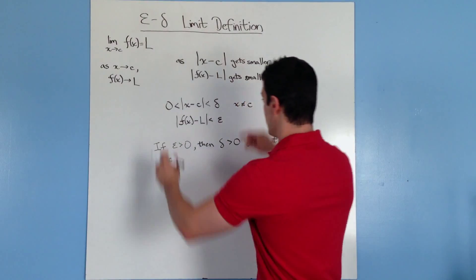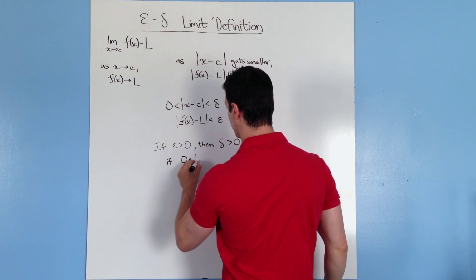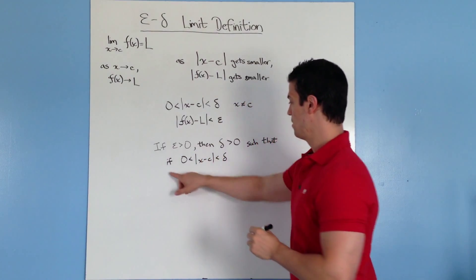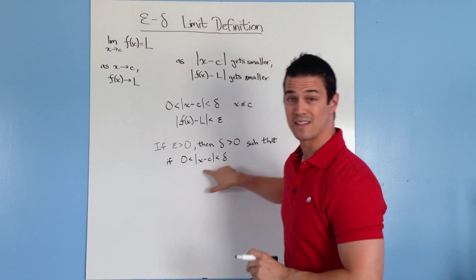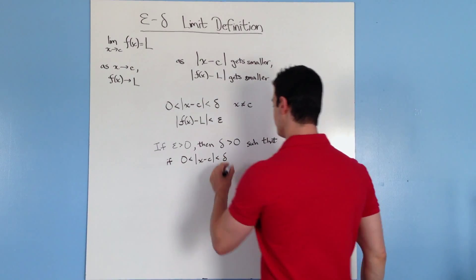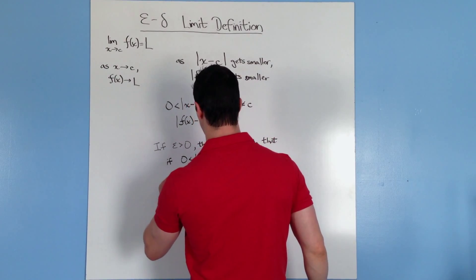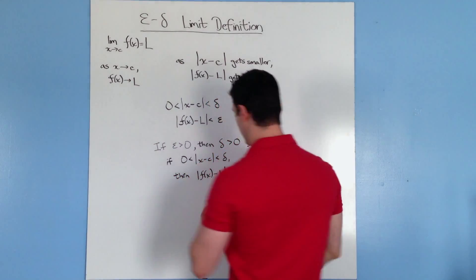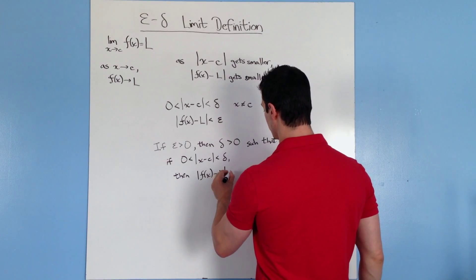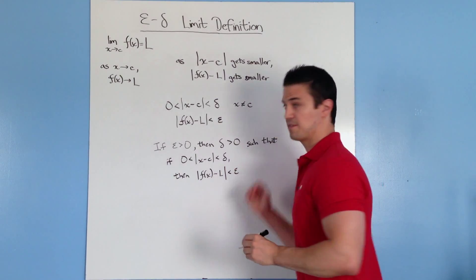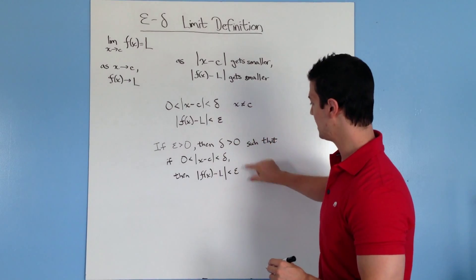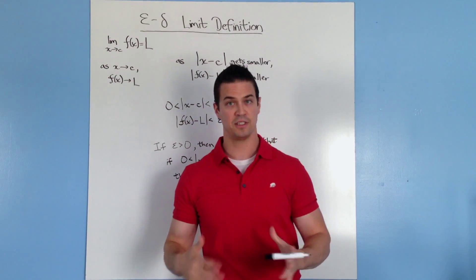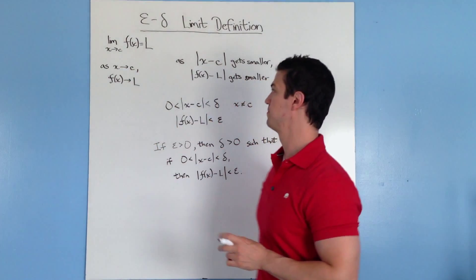Such that we have, such that this right here, if zero is less than how close x and c are to each other, which is smaller than delta, then the closeness between f of x and its limit is less than epsilon. So basically we're just moving what's over here, down here, into a formalized definition. So this right here is going to be your definition for a limit based on this up here.